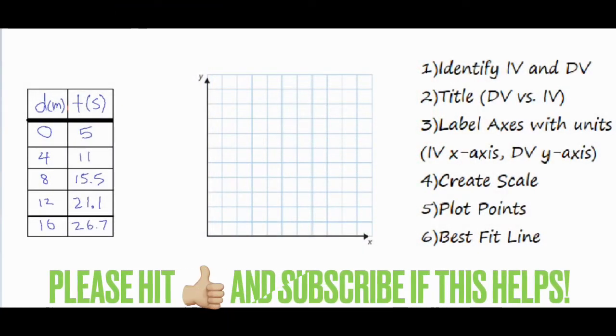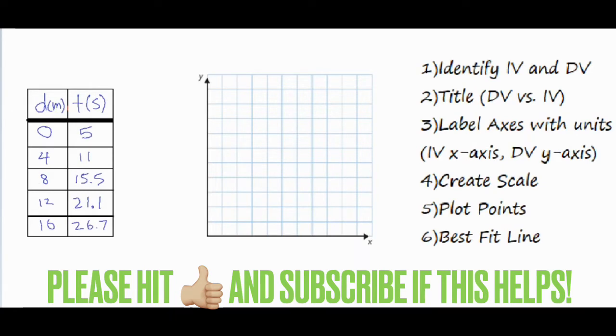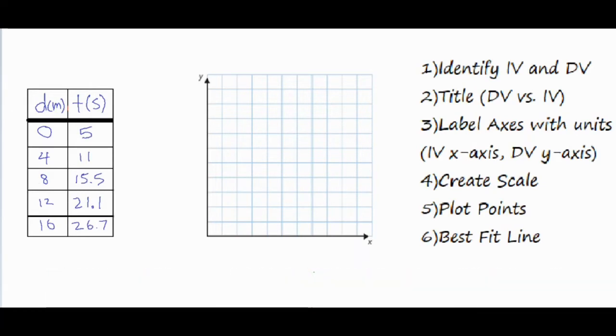In this video I'm going to talk to you about how to make a graph by hand. There are six steps to follow to properly make a graph by hand. Number one, you want to identify the IV, the independent variable, and the dependent variable.